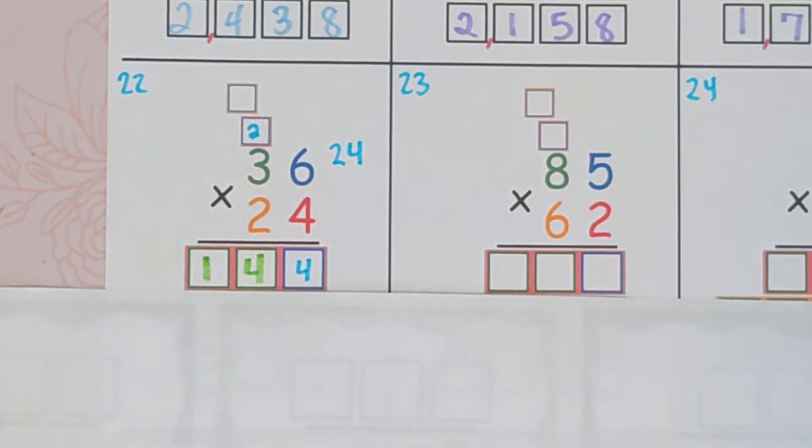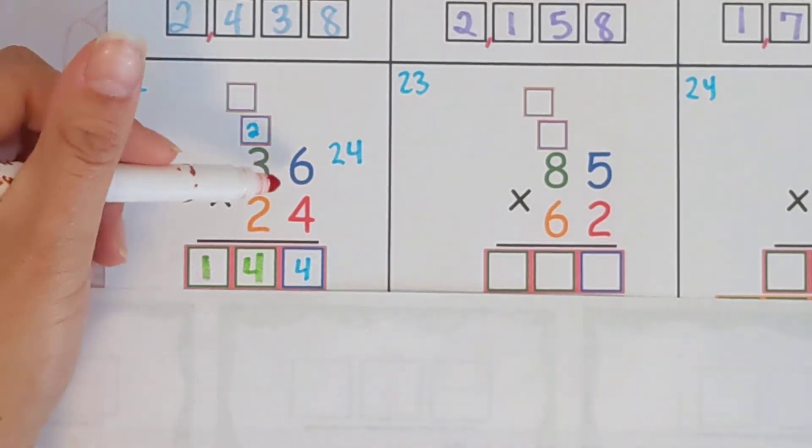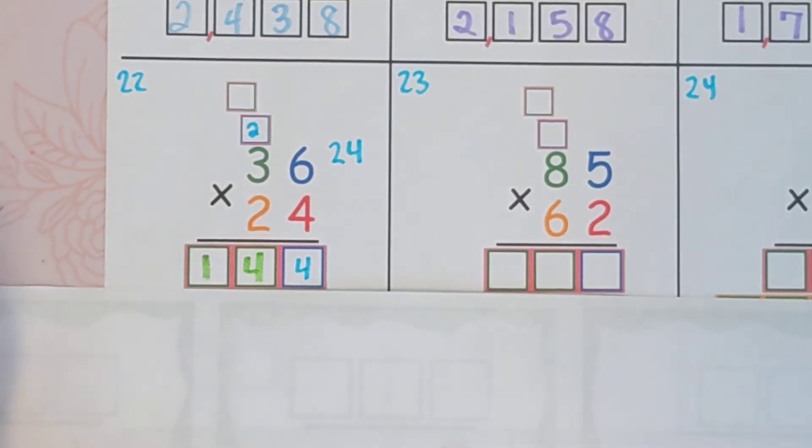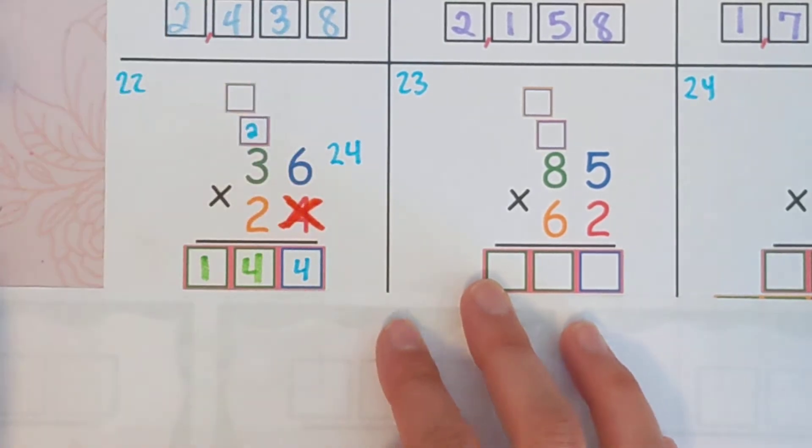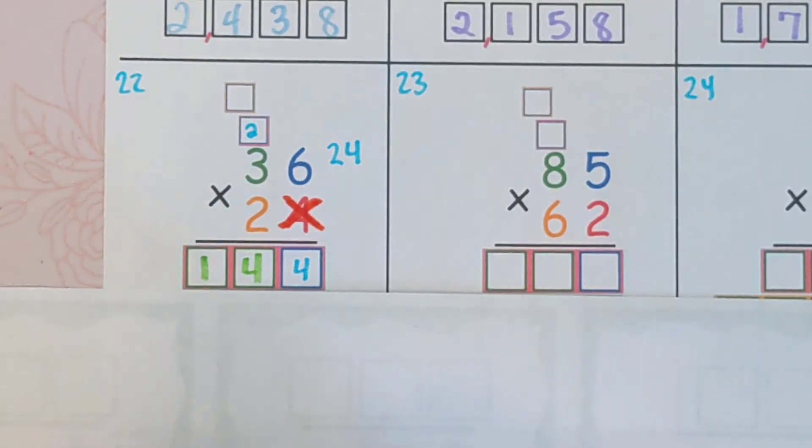Now you are finished with the four. You need a way to remind yourself that the four, it came, it multiplied. It's done. It did its job. So we cross it out. And that's very helpful to remind ourselves that we're done with it.